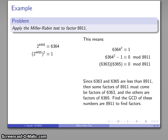Because the product is congruent to 0, I know 8911 divides these two numbers.